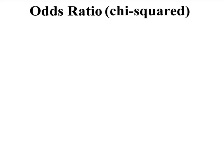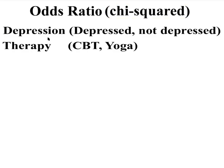First of all we're going to look at two variables: depression, which is categorical and dichotomous with two levels — depressed or not depressed — and therapy, where one is CBT and one is yoga.